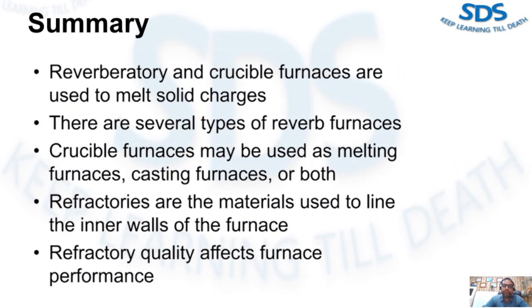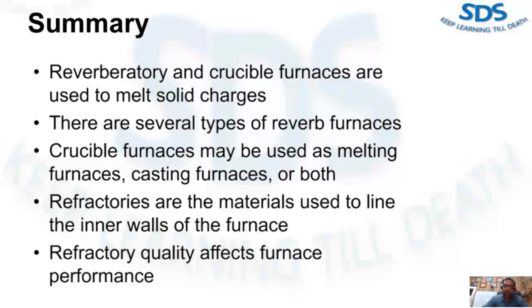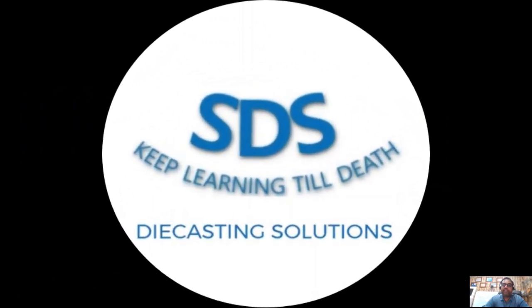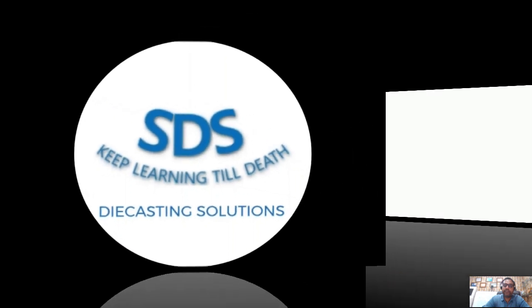In summary: when solid metal is used in a die casting facility, the charge must be melted in a furnace. Two types of melting furnaces are primarily used — reverberatory and crucible. There are several types of reverb furnaces. The crucible furnace may be used as a melting furnace, casting furnace, or both. Refractories are the materials used to line the inner walls of the furnace, and the performance of the furnace depends in part on the quality of the refractory. Thank you for watching — keep following us, keep sharing this video, and keep learning.